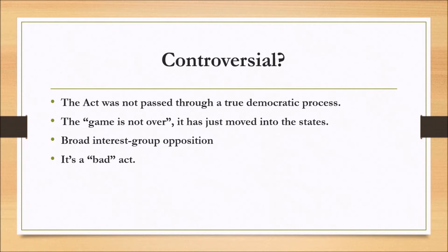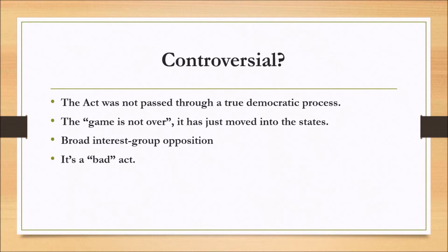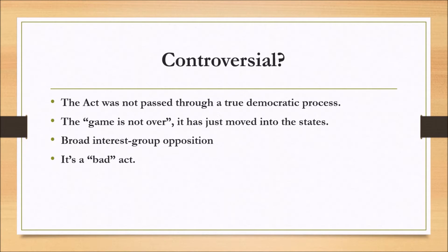Broad interest group opposition: opponents range from privacy and civil liberties organizations like the ACLU to conservative groups to immigration groups. Most fundamentally, the Real ID Act has sparked opposition because it would not be good for our country.